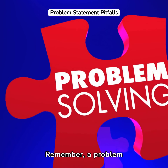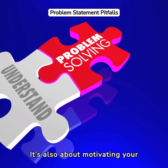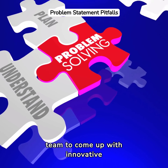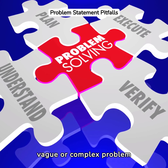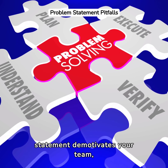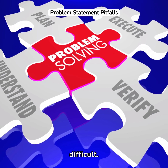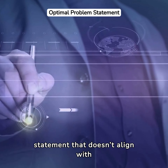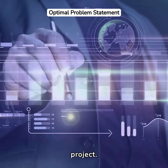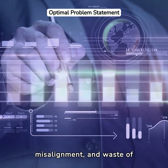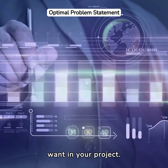Remember, a problem statement isn't just about defining a problem — it's also about motivating your team to come up with innovative solutions. A vague or complex problem statement demotivates your team, making problem-solving difficult. Moreover, a problem statement that doesn't align with business objectives can derail your project, causing confusion, misalignment, and waste of resources.